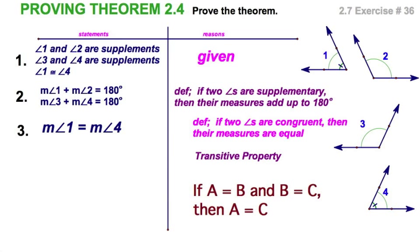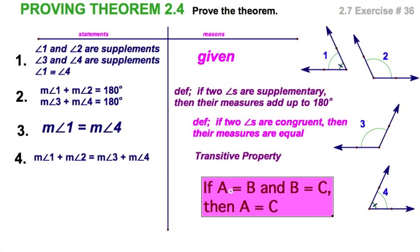Or in this case, the measure of angle 1 plus the measure of angle 2, since that equals 180, and 180 also equals the measure of angle 3 plus the measure of angle 4, I come up with this line using the transitive property. Move that off to the side, but remember that.